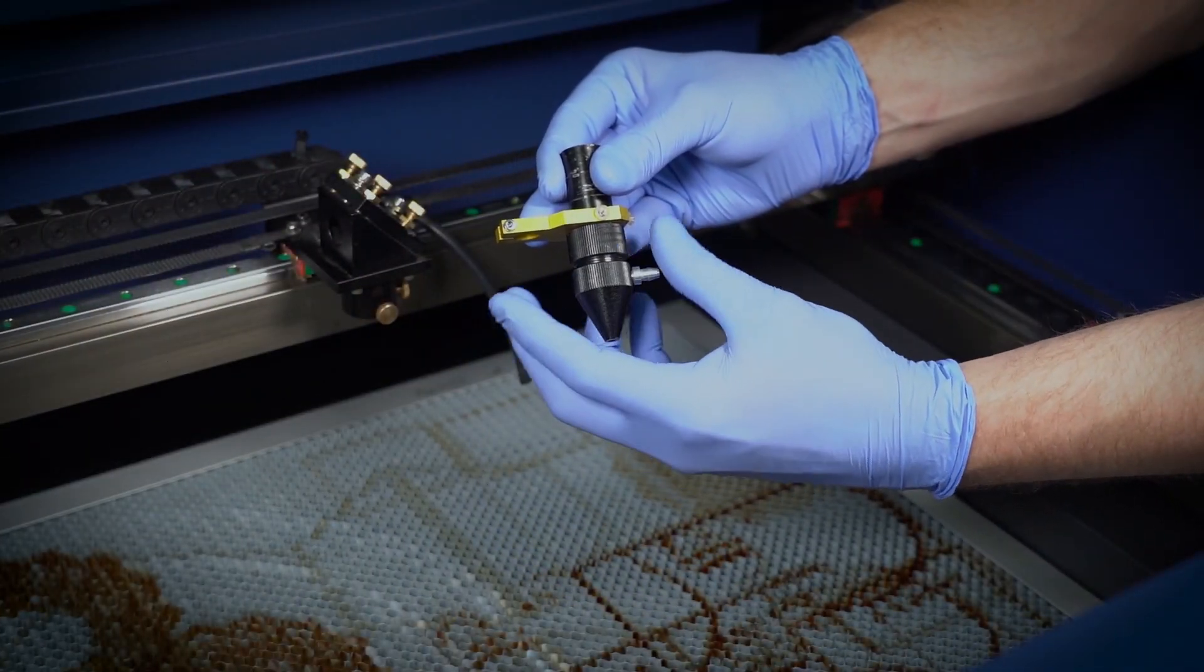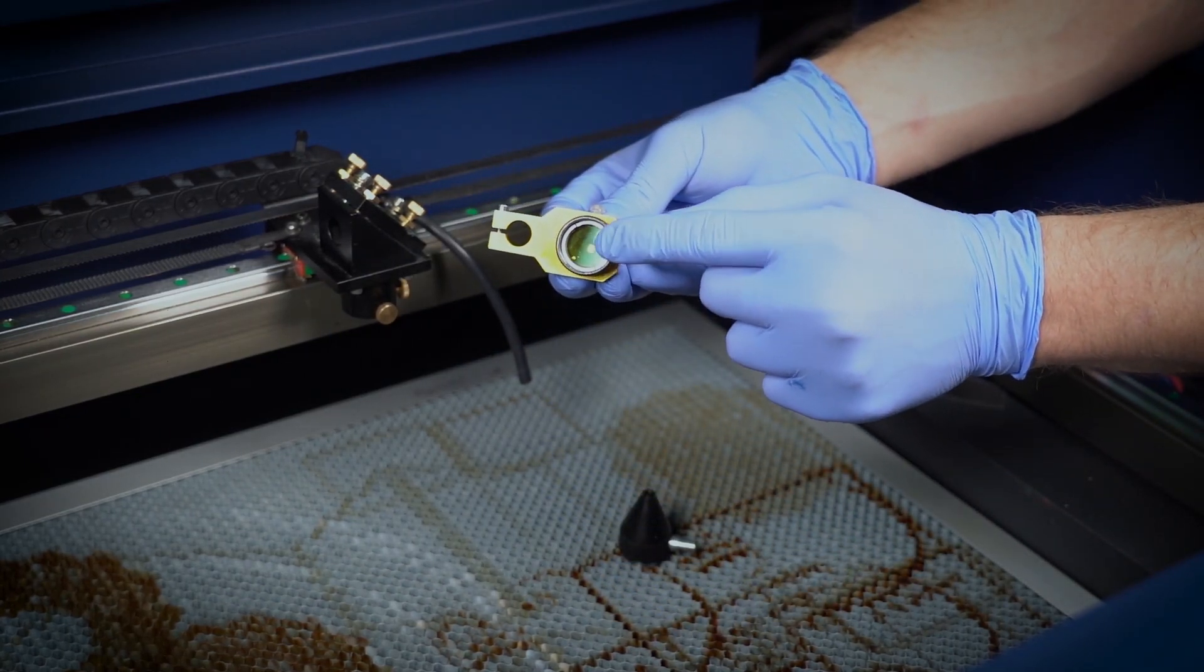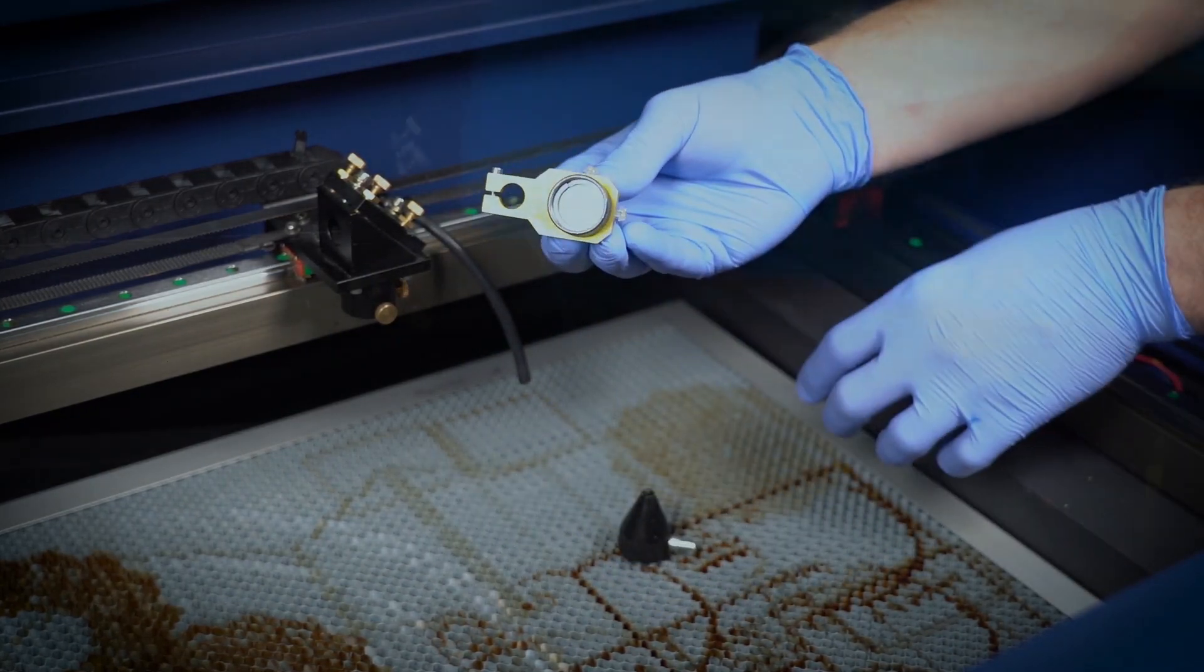The nose cone simply screws off, and you'll see your lens and a silver collar with two notches in it.